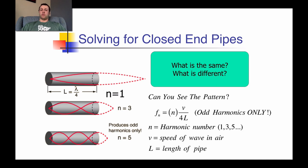A similar pattern is that the longer the pipe, as long as the speed of the wave stays the same, the lower the note produced — lower frequency, lower pitch. The shorter the pipe, the higher the frequencies and higher pitches. Note the difference between 4L and 2L in the formula for closed versus open pipes respectively. Note the wave behaviors at the ends — node versus antinode. Most importantly, closed pipes will only produce odd harmonics.